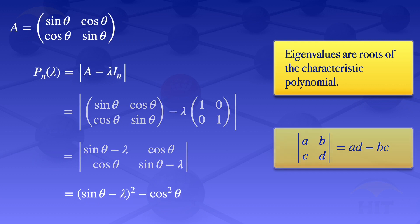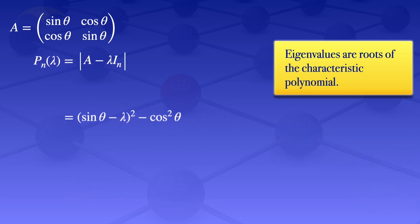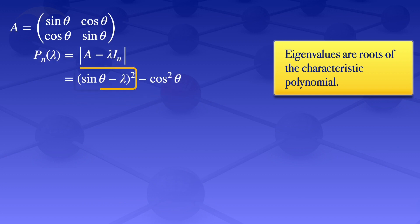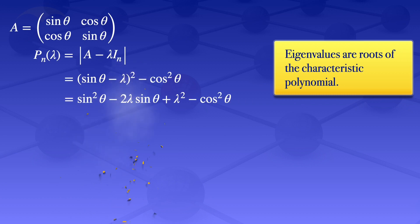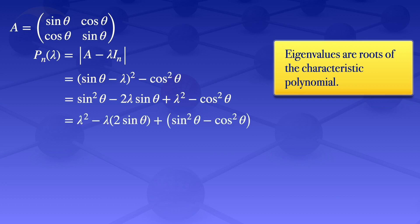That is our characteristic polynomial. Expanding the squared term gives sin²θ − 2λ sin θ + λ² minus cos²θ. Combining terms by treating sin²θ − cos²θ as a constant, we can rewrite this as λ² − 2 sin θ · λ + sin²θ − cos²θ.